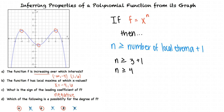To summarize: to determine if the function is increasing or decreasing, we look to see where the graph is rising and falling. To determine where the local extrema are, we identify at what points the graph transitions between increasing and decreasing. To determine the sign of the leading coefficient, we examine the end behavior of the graph. We can also use end behavior to determine if the degree is odd or even, and from there decide possible degrees based on the number of local extrema.